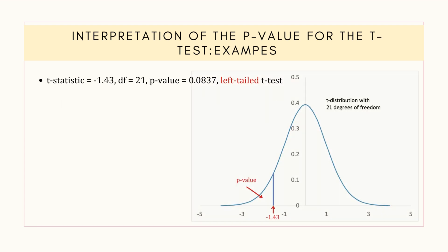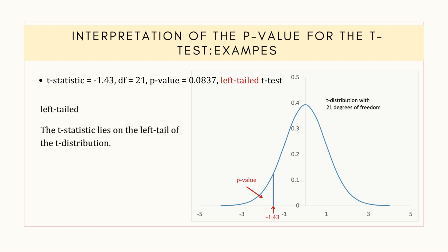In the first case, from the given information, we can observe that the hypothesis test is left-tailed. The t-statistic lies on the left tail of the t-distribution. The t-statistic follows a t-distribution with 21 degrees of freedom, and the p-value is 0.0837.